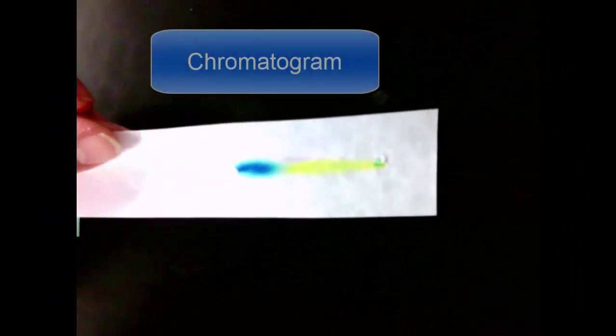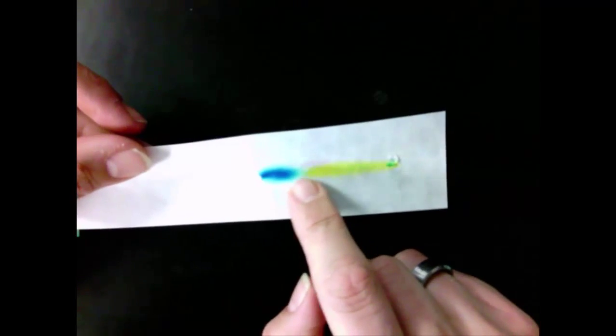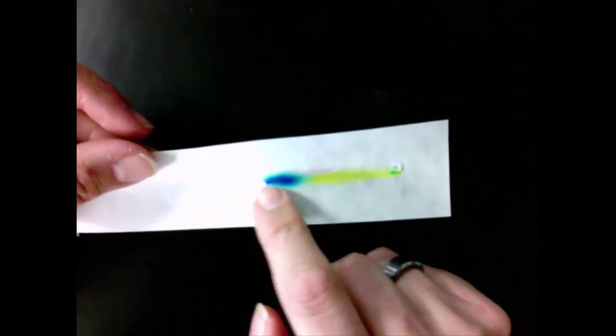Our analysis is done. It's time to calculate our retention factor and see if we can match the ink. So our chromatogram, that's what you call this filter paper now that we've done the separation, is finished. And as you can see, our little dot of green has separated into two colors, some yellow here which stops about there, and some blue which goes up here.